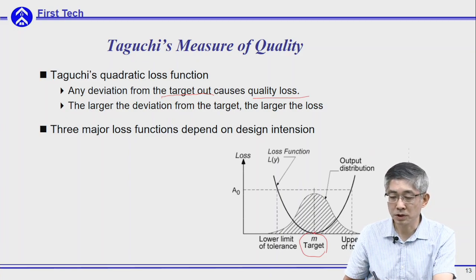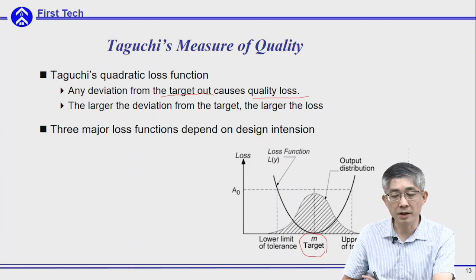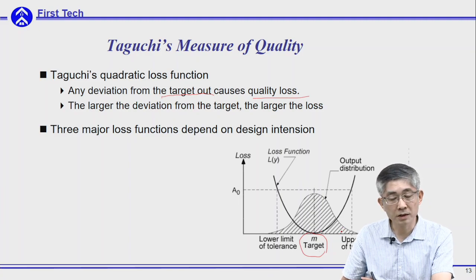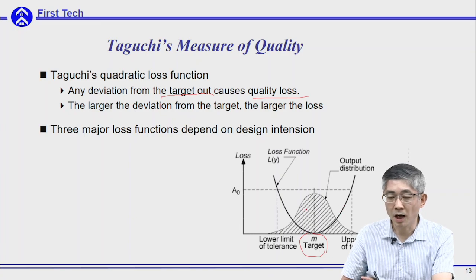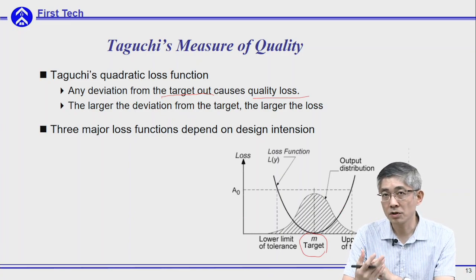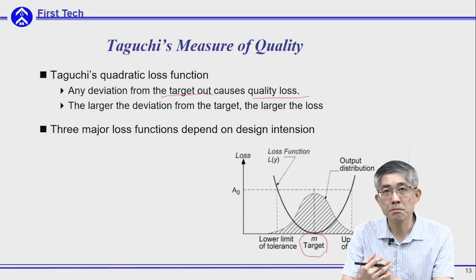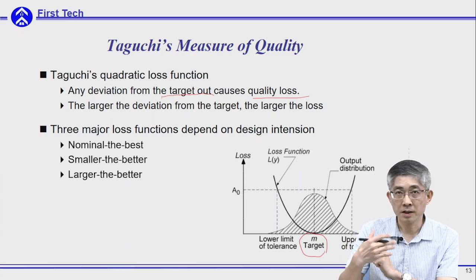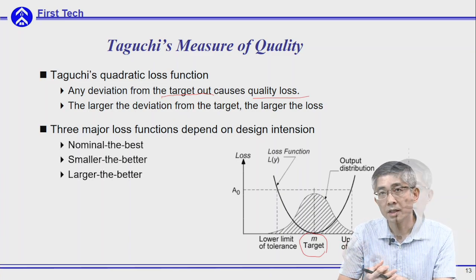Based on these concepts he proposed a quadratic function where the target point has no loss. If the output is right at the target there will be no loss, and if the output is away from the target, the farther it is from the target the larger the loss. He thinks this kind of loss function can better describe quality.